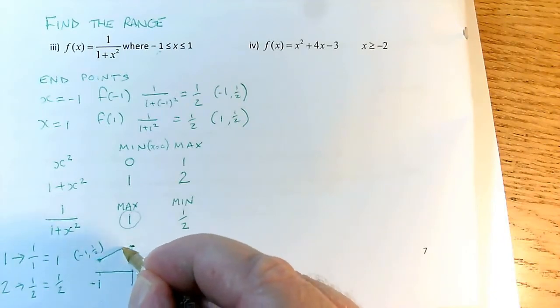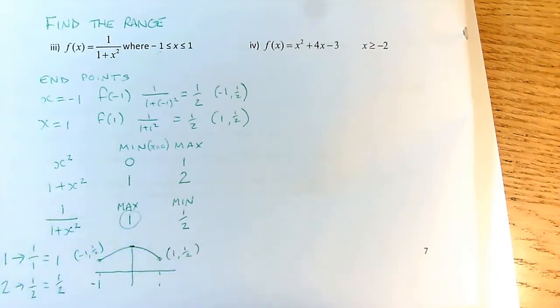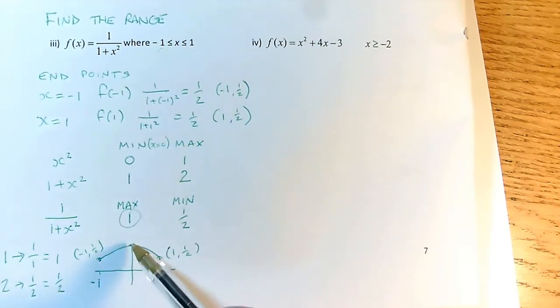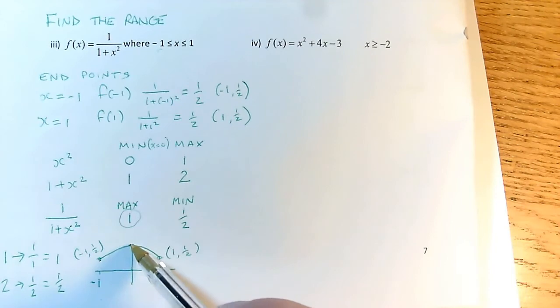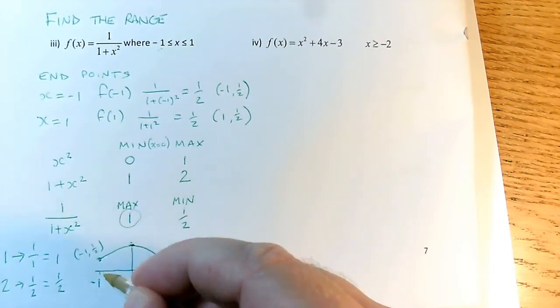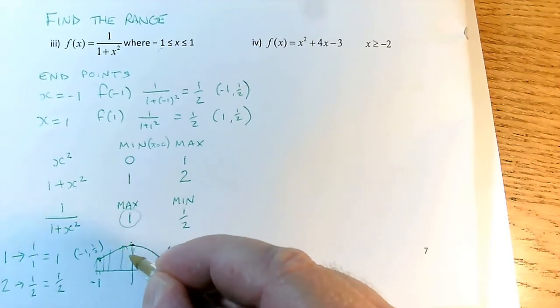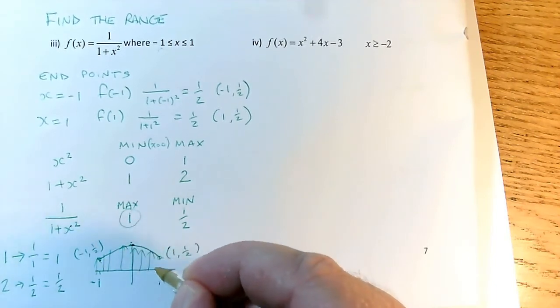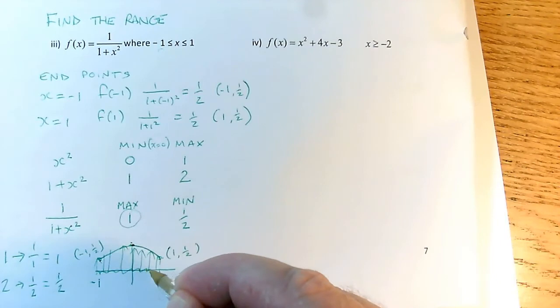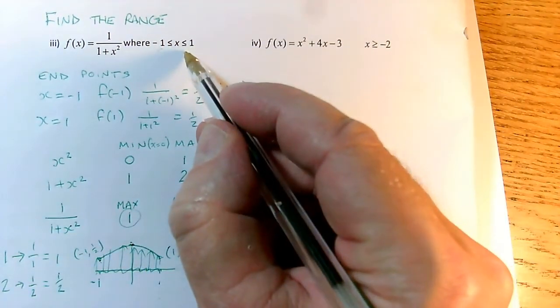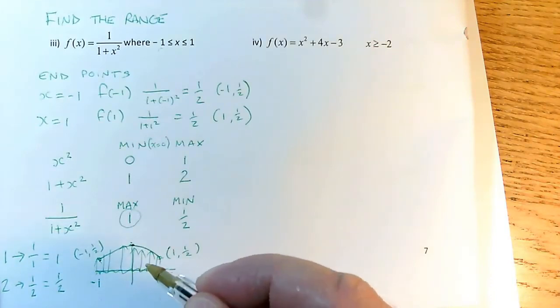It turns out the graph does something like this. I don't know exactly what shape it is, but I've reasoned that the lowest value it can have is a half, and the highest value it can have on the y-axis is 1. So the domain, all of these values between minus 1 and 1, this is how I visualize the domain, all of this bit of the x-axis can be fed into the function. That's the given domain here.